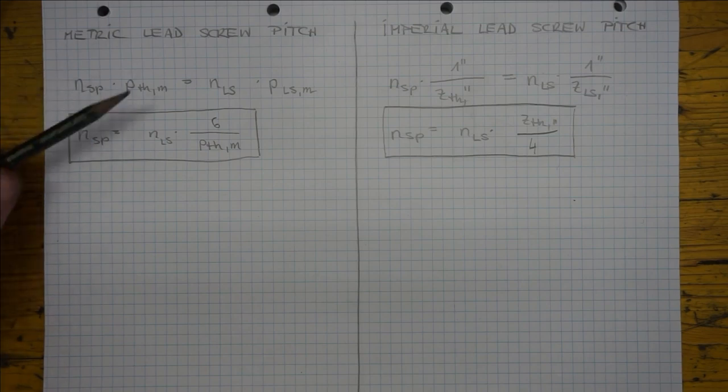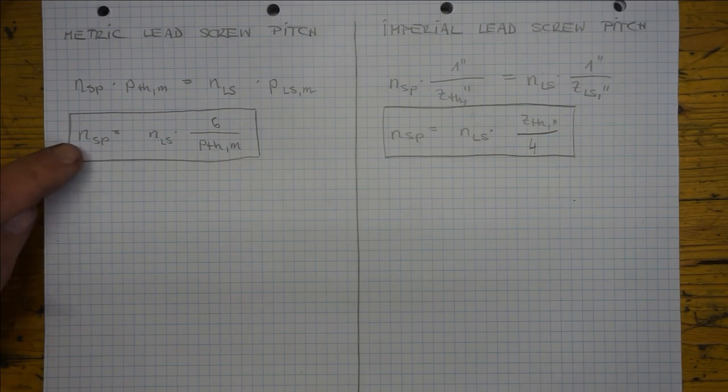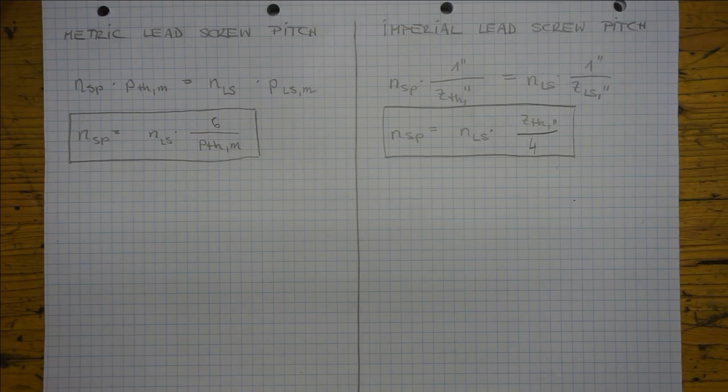This means NLS must be an integer number. Things are similar for NSP, the number of spindle revolutions. Basically we don't care how many turns the spindle made until we re-engage the clasp nut. What we care about is that the tool starts at the same threading point on the workpiece. In mathematical terms this means NSP must be an integer number too.